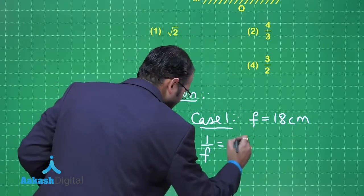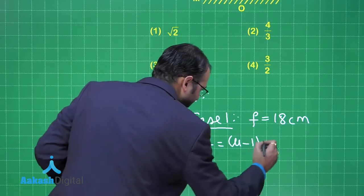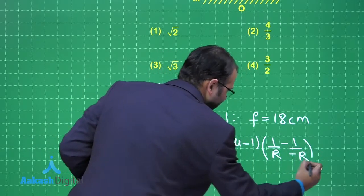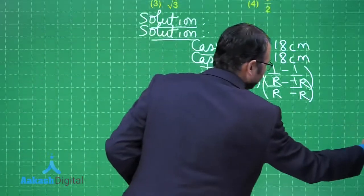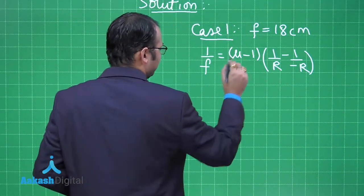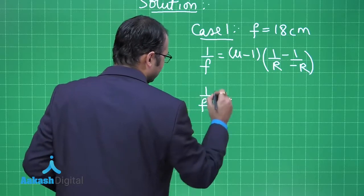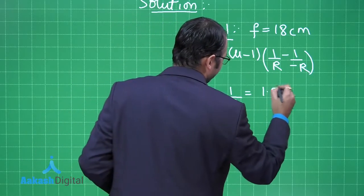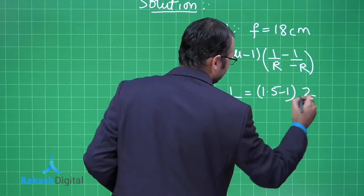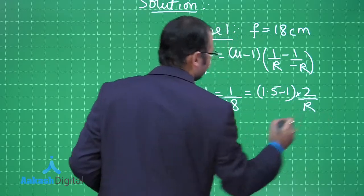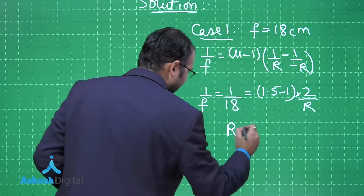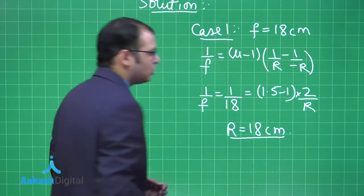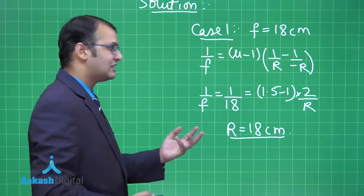In Case 1, using the lensmaker's equation: 1/F = (μ−1)(1/R − (−1/R)), since it is an equibiconvex lens. With μ = 1.5 and F = 18 cm, so 1/18 = (1.5−1)(2/R). Solving, we get R = 18 centimeters — the radius of curvature of the surfaces.